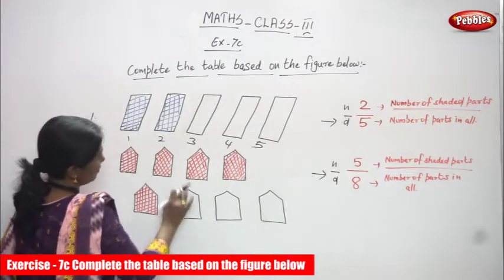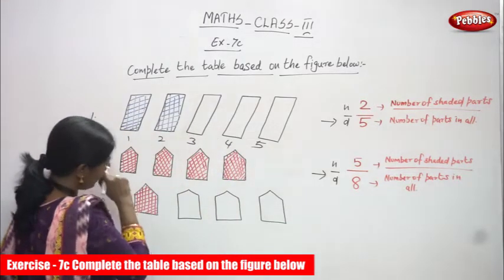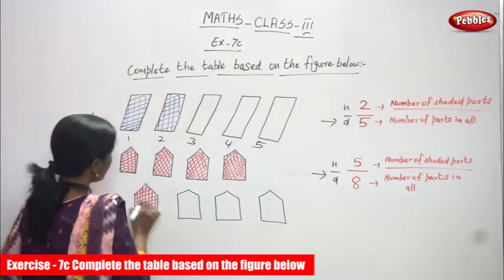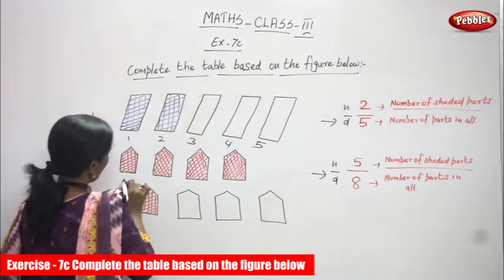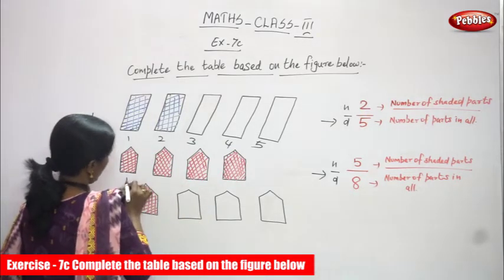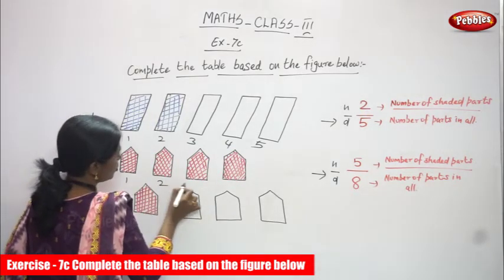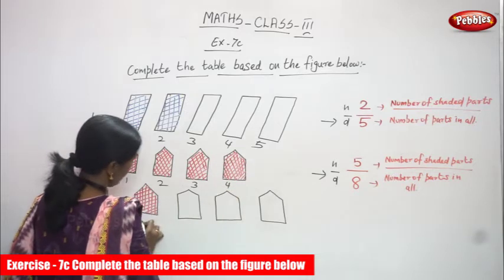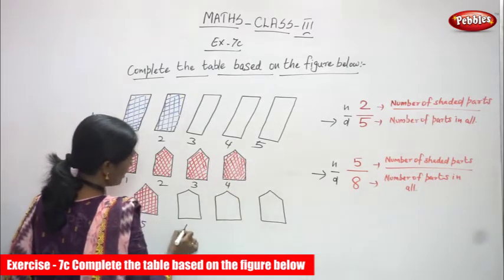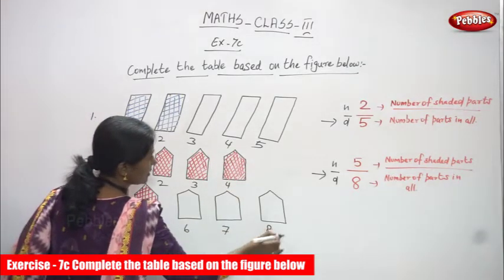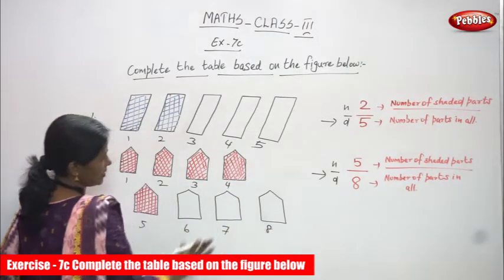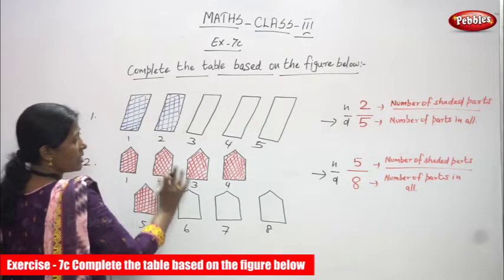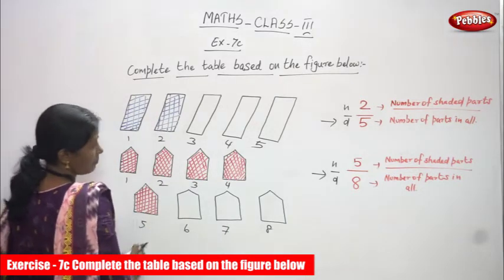Next diagram — it's another shape, like a house type. So, 1, 2, 3, 4, 5, 6, 7, 8. So, how many shapes? 8 shapes.